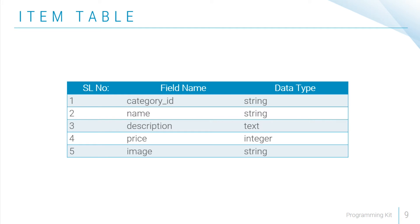We have a category_id which defines the relationship, and we have a name, description, price, and image. The name is a string, category_id is an integer defining the relationship, description is a long text field, and we have a price and an image field.